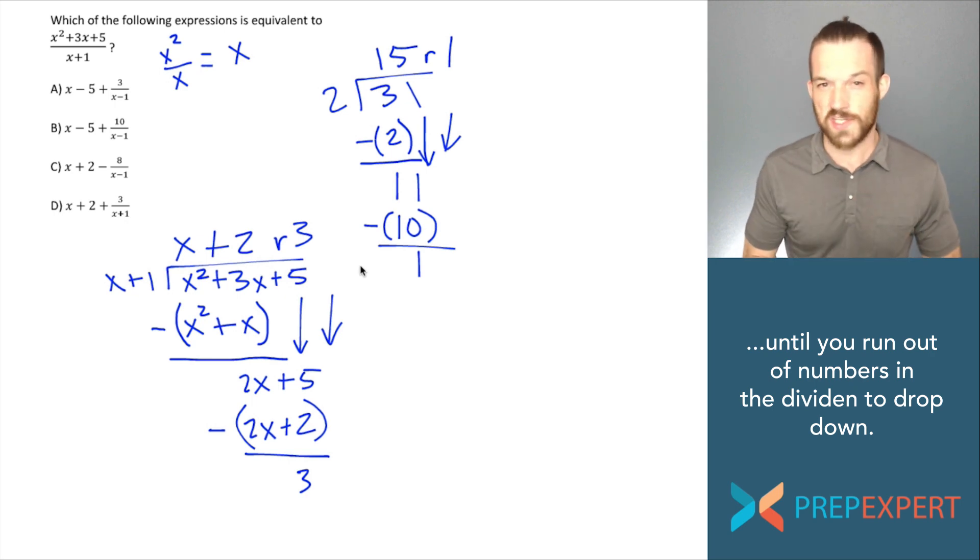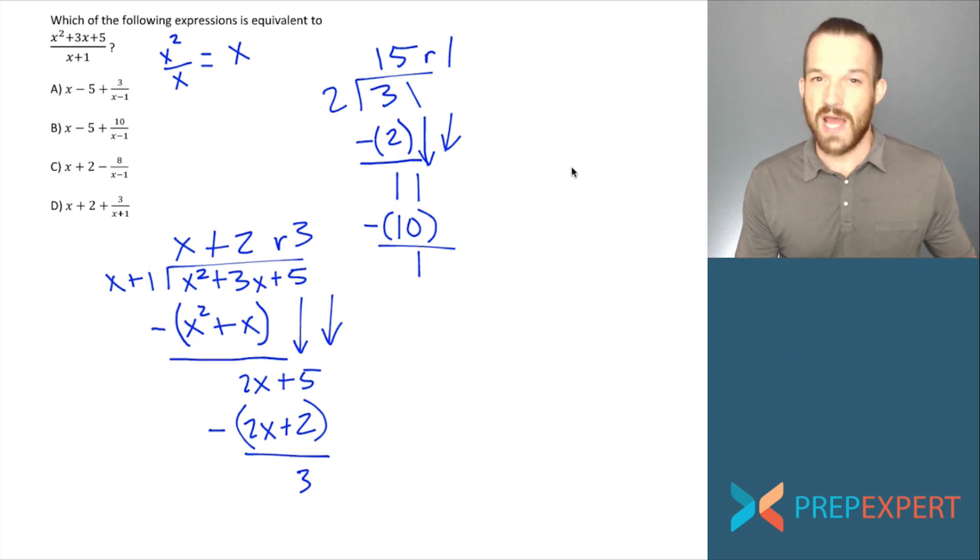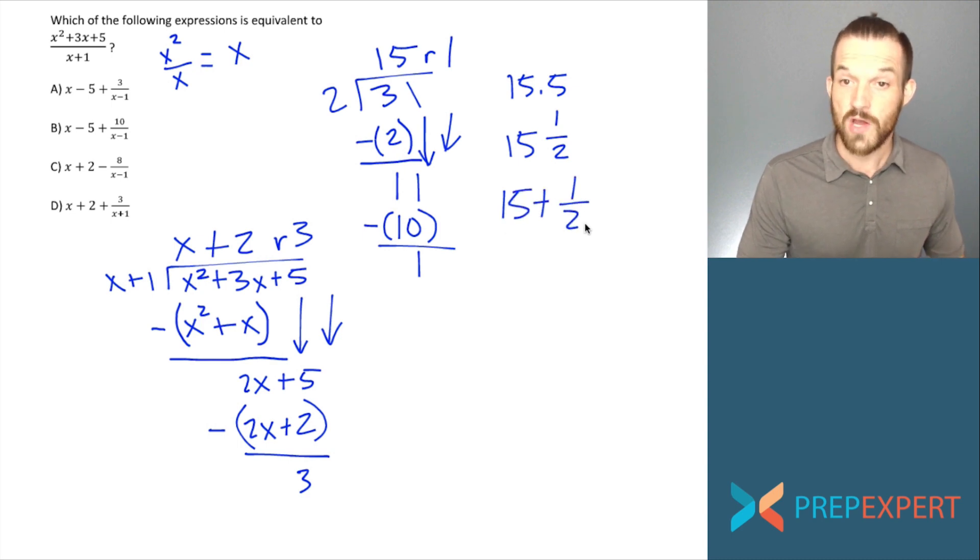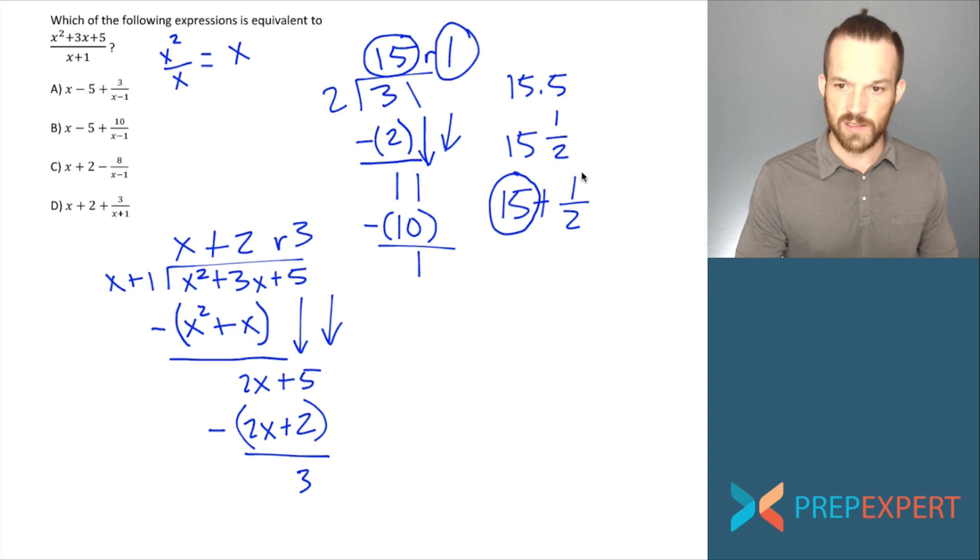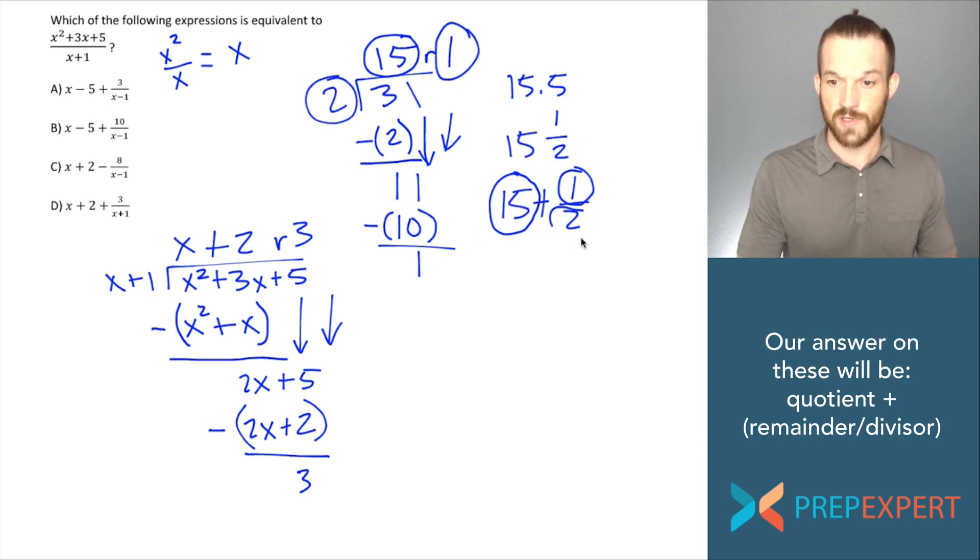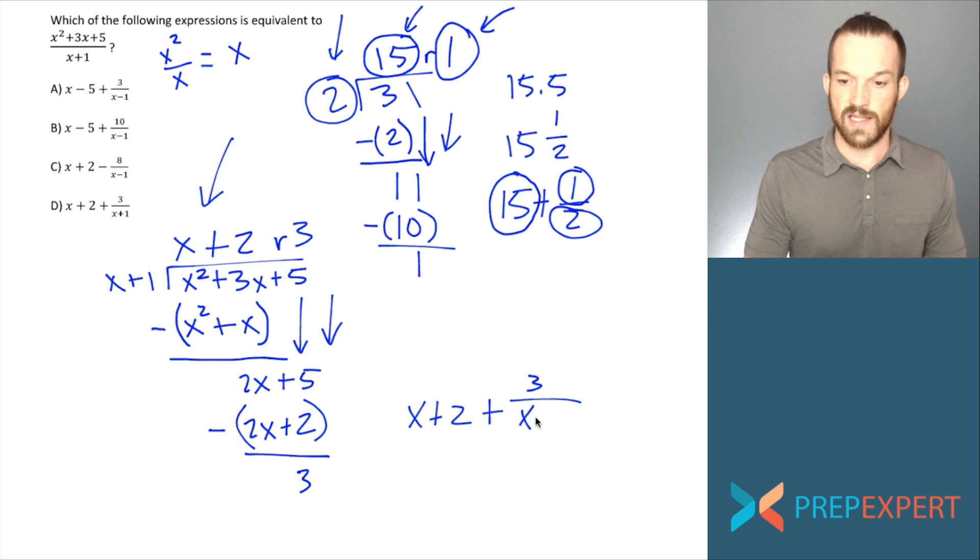Now, if you notice, none of the answer choices say anything about a remainder. So what do I do from here? Well, if I asked you how many times 2 goes into 31, you're not likely to say 15 remainder 1. What would you really say? You'd probably say 15.5 or maybe 15 and a half. You may never have noticed, but 15 and a half is actually just 15 plus 1 half, which, if you look closely, is actually our quotient of 15 plus our remainder of 1 over our divisor of 2. Pretty cool, huh? That's where 15 and a half comes from. It's the quotient plus the remainder over the divisor. We're going to do the same thing in polynomial division. What's my formal answer? It's going to be my quotient, x plus 2, plus my remainder of 3 over my divisor, x plus 1. And that, ladies and gentlemen, is our answer: x plus 2 plus 3 over x plus 1. Polynomial division can really be that simple.